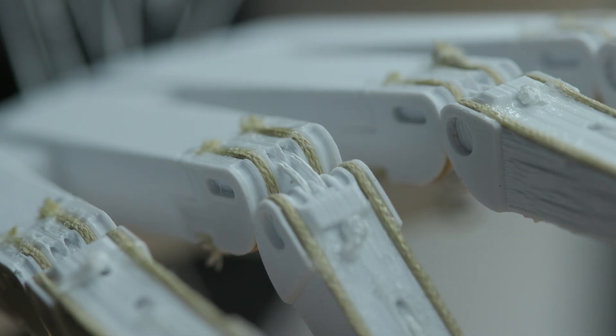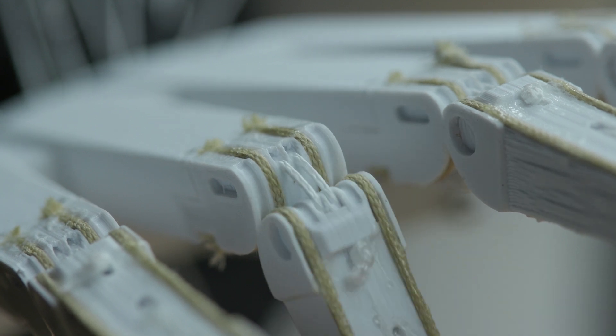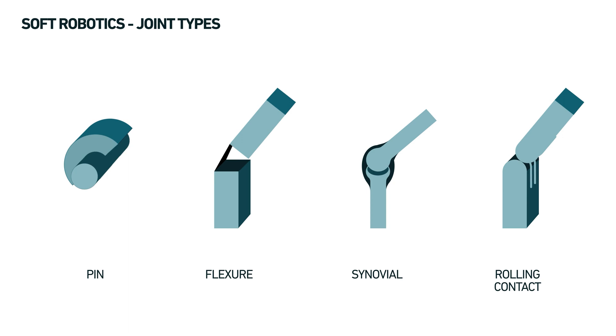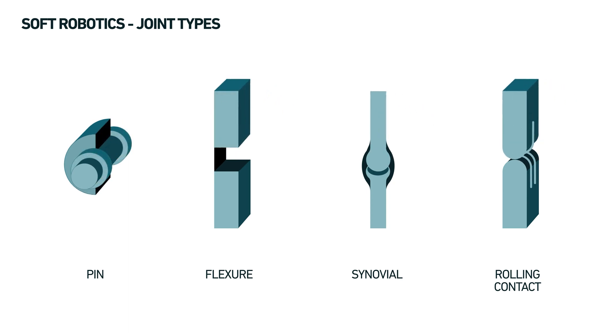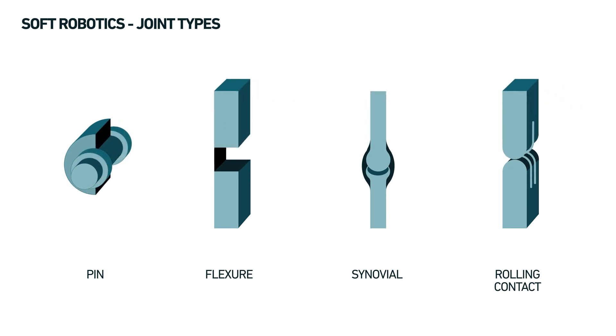And there you have it. The joint mechanisms that form the foundation of our robotic hand's mobility. They combine simplicity and elasticity to create harmonious movement.